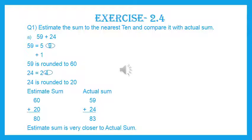Round off to the nearest 10: we need to check the 1's place. If the 1's place is less than 5, we just need not to add 1 to the 10's place. We simply write down the 10's place as it is, and the digit at 1's place will become 0. For example, 54 — the 1's place is 4, which is less than 5, so we simply write down 50.